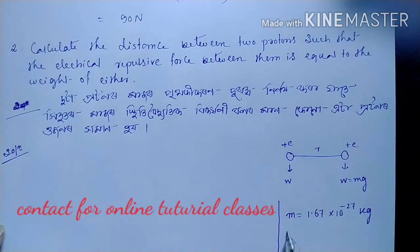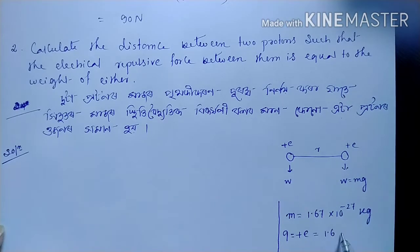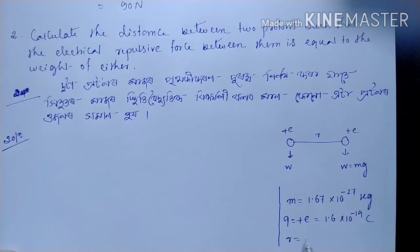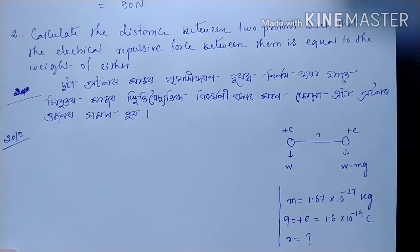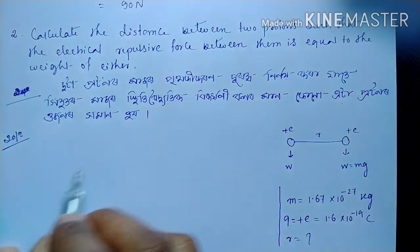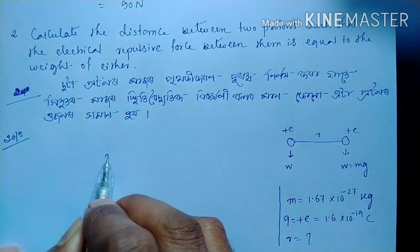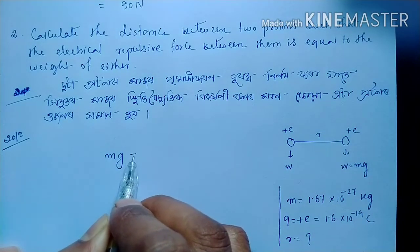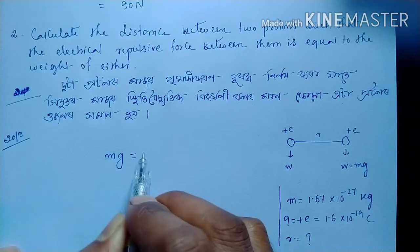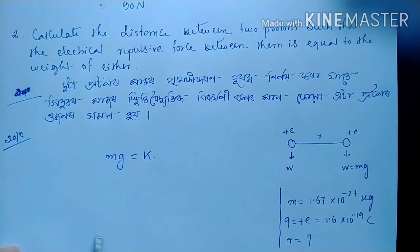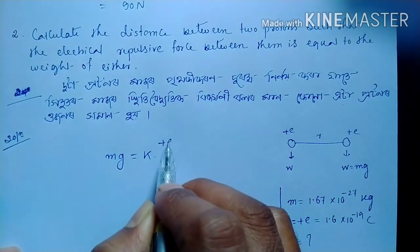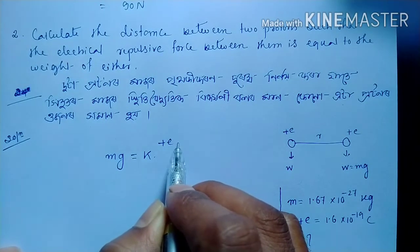The charge of a proton Q = +e = 1.6 × 10⁻¹⁹ coulomb. Let r be the distance between the two protons. According to the condition, the weight Mg is equal to the electrostatic force of repulsion between the two protons.